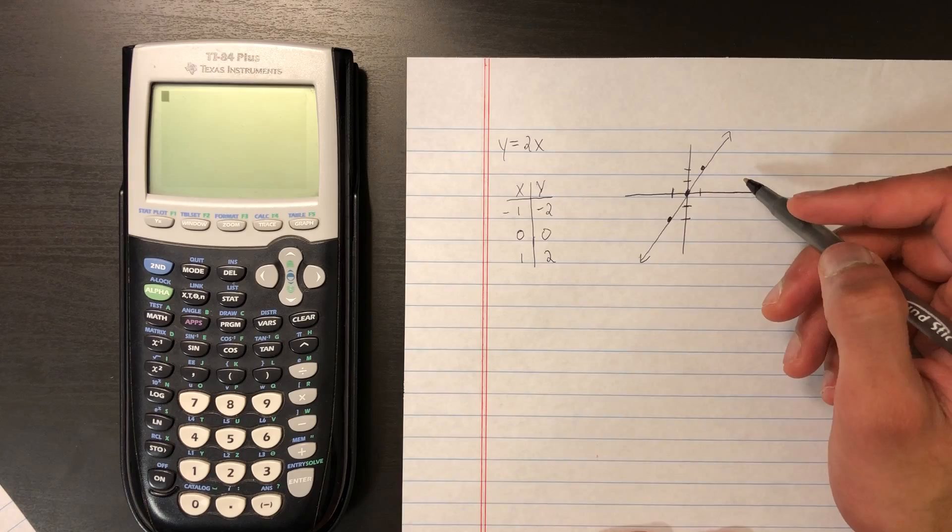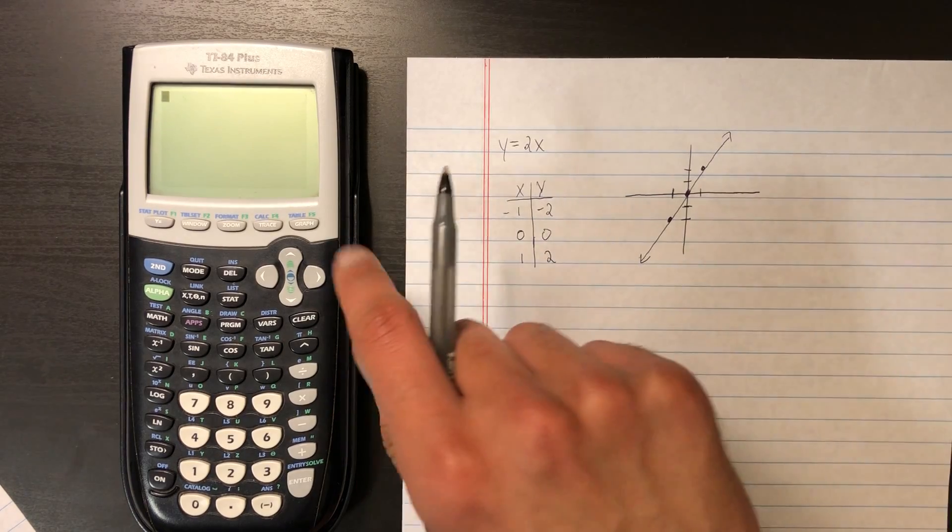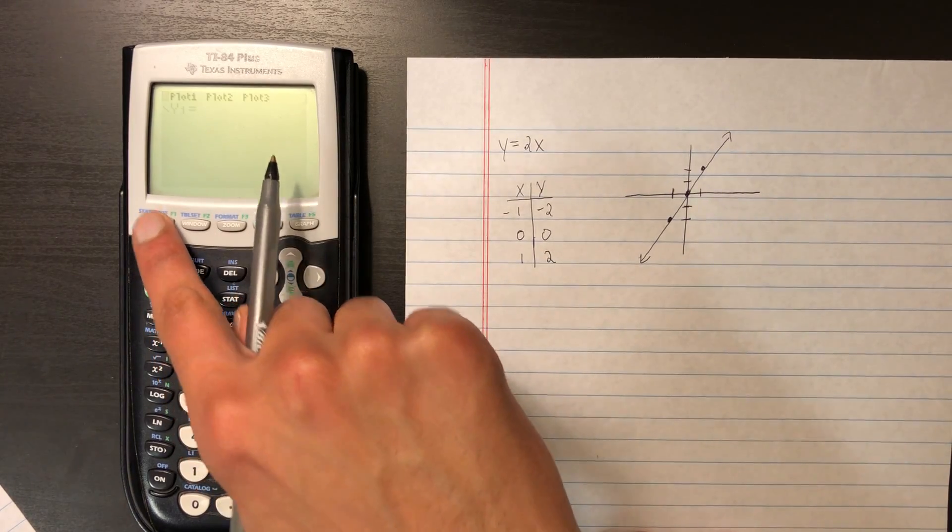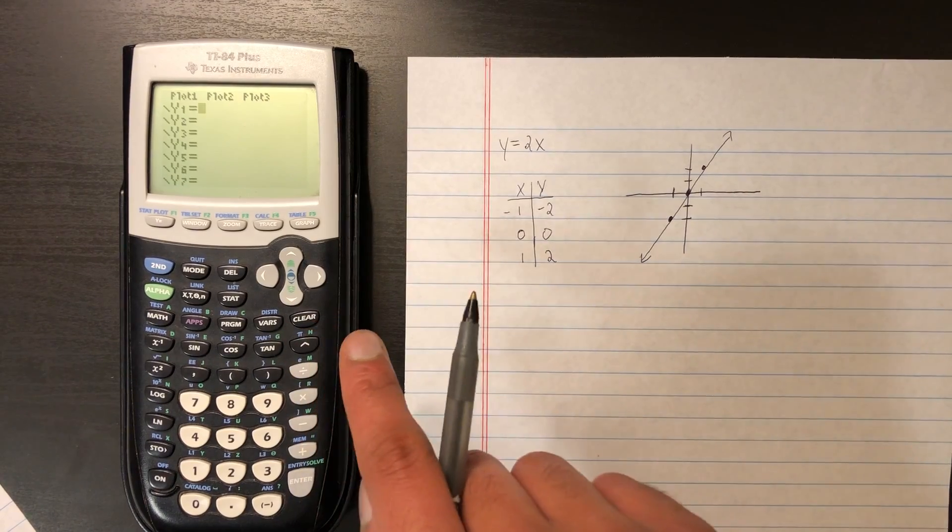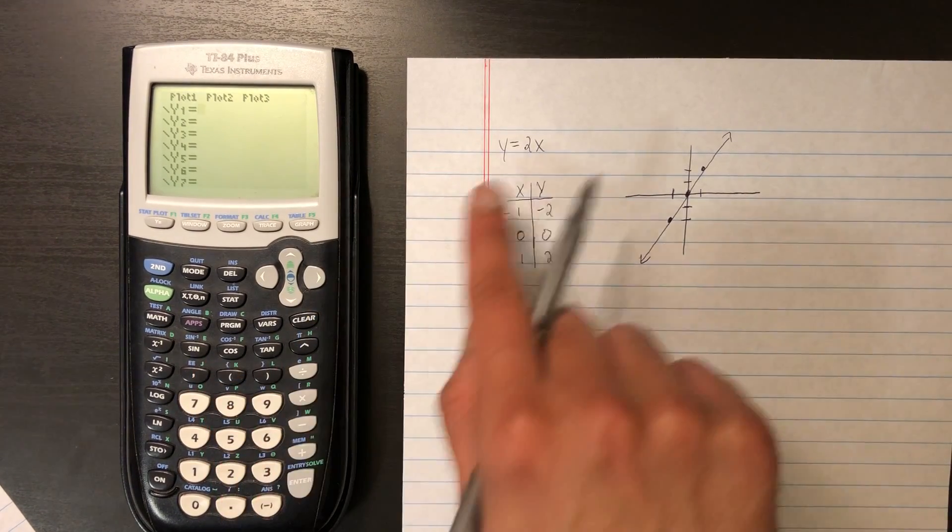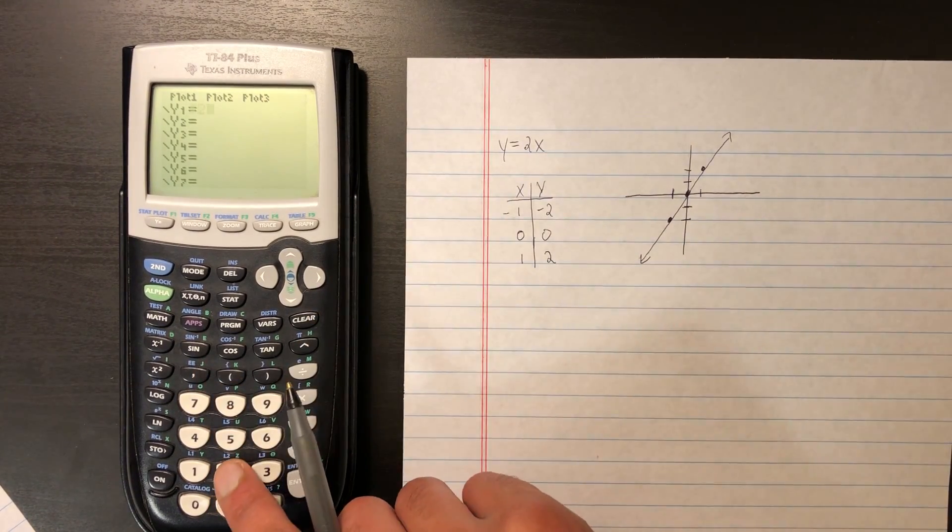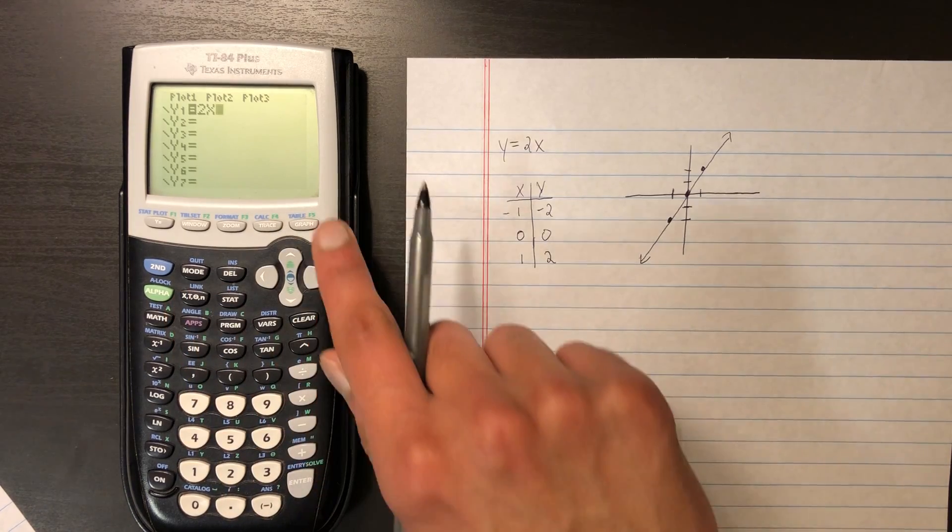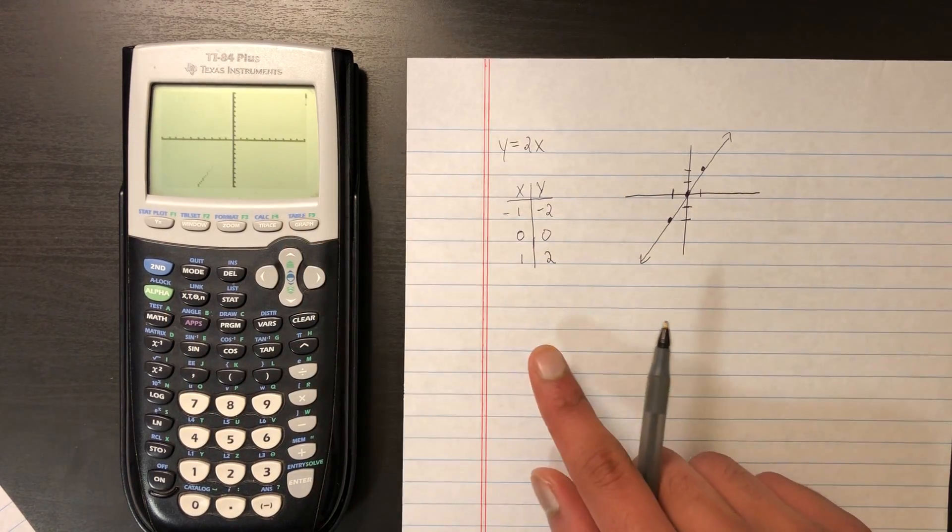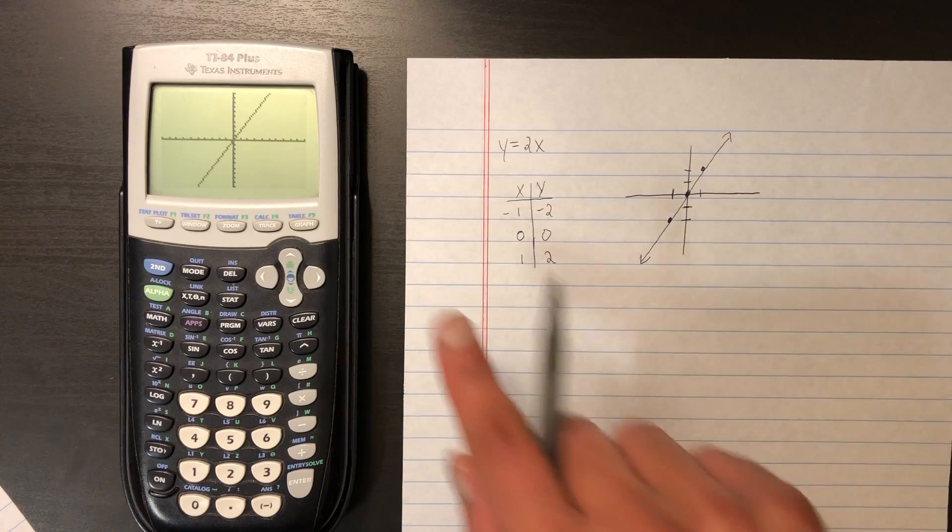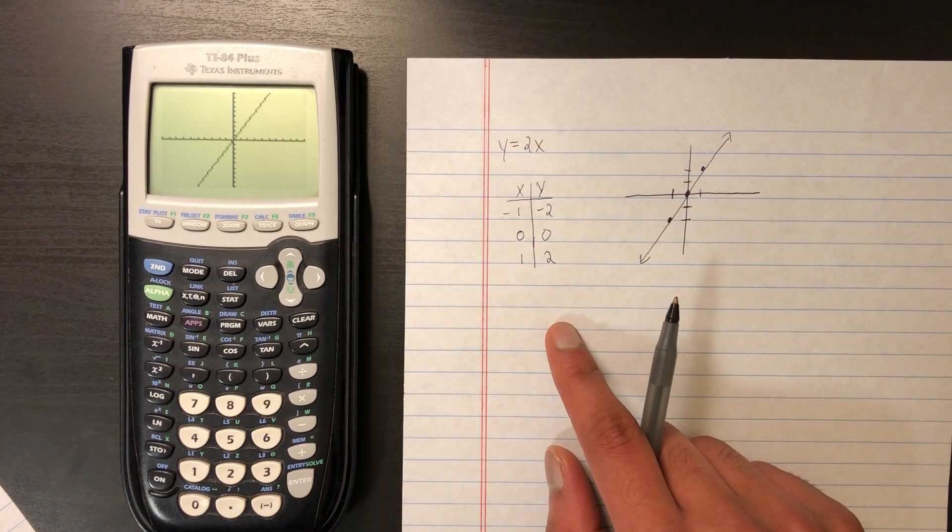So if we wanted to do that on our graphing calculator, we would go to y equals, and then here we'll enter in the equation 2x, and then hit graph. And we can see the graph here of y equals 2x.